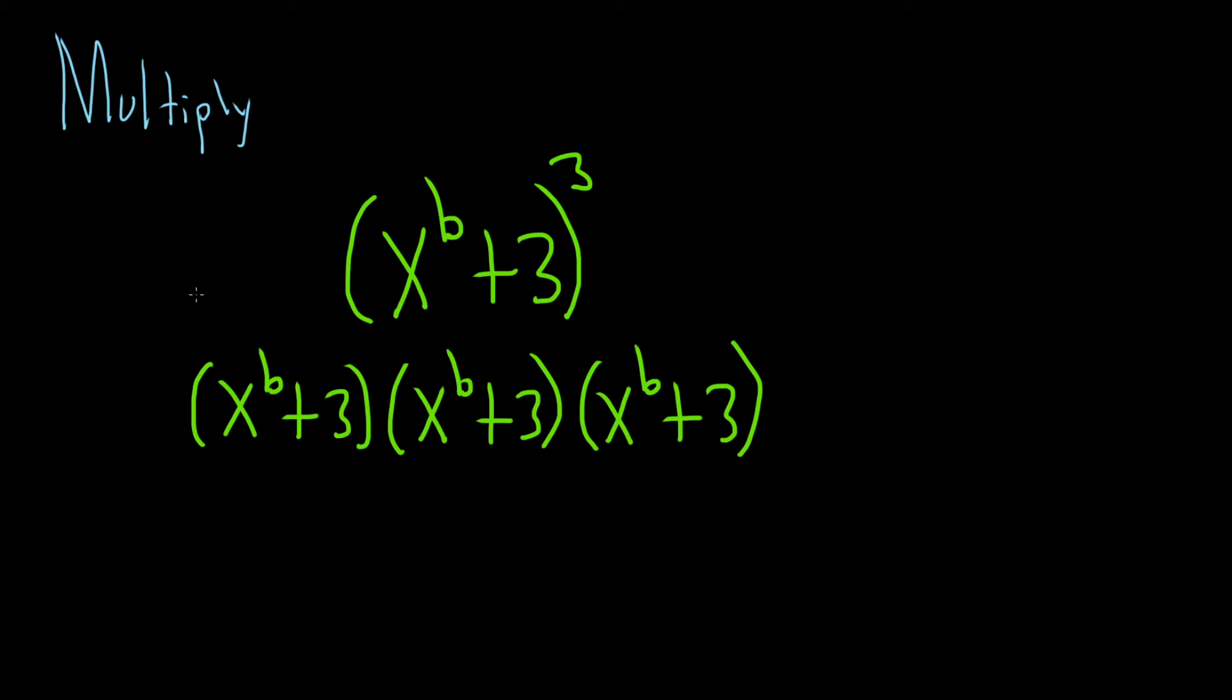And now we're going to distribute. So let's focus on this piece here. We'll take this x to the b and multiply it by both of the terms in this second parentheses. So x to the b times x to the b, well what you do is you add the exponents. So b plus b is 2b.